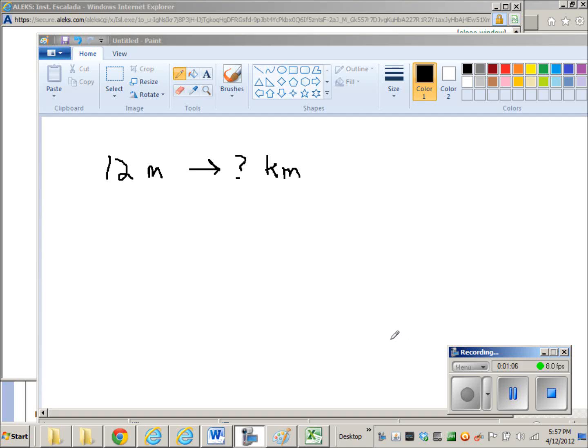If I needed to convert 12 meters into kilometers, I would first need to figure out what the conversion factor is going from kilometers to meters. So I would actually look up what the prefix kilo means. It means 1,000. So 1,000 meters equals 1 kilometer.